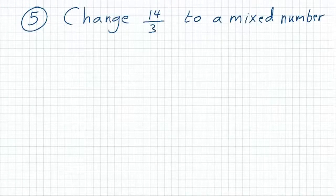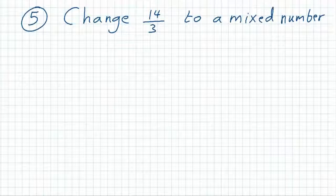Example 5: change 14 over 3 to a mixed number. To do this without a calculator, you need to use long division, dividing 14 by 3.